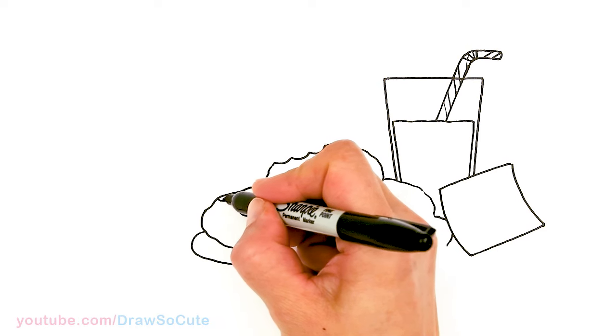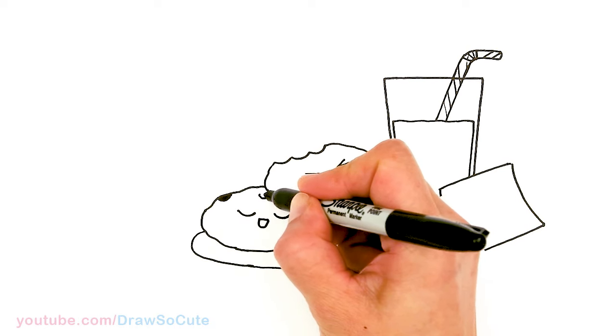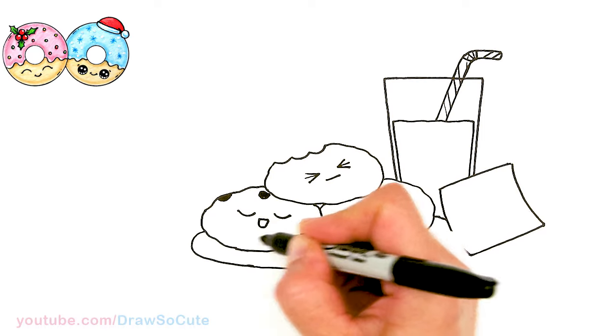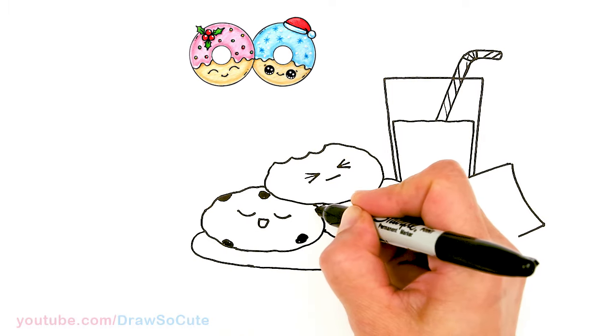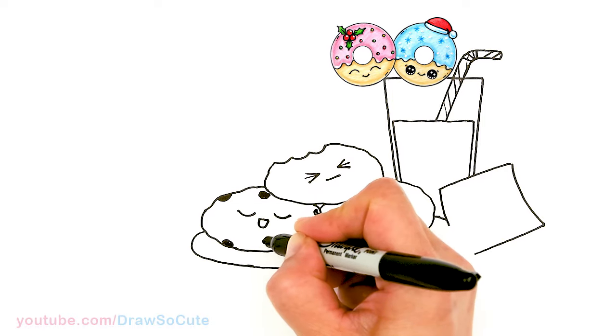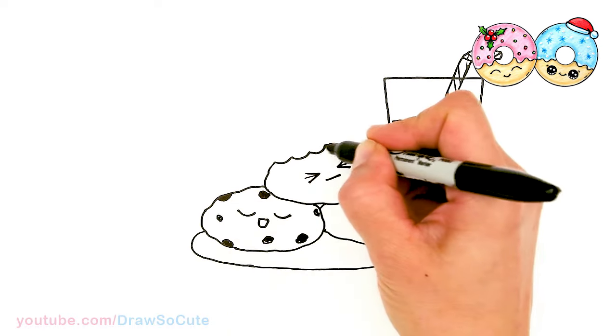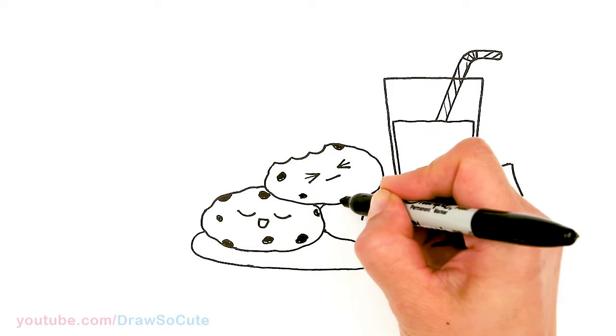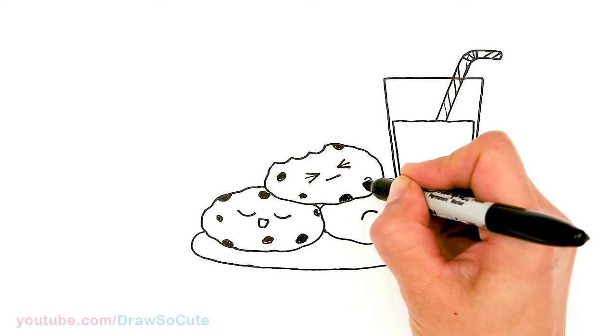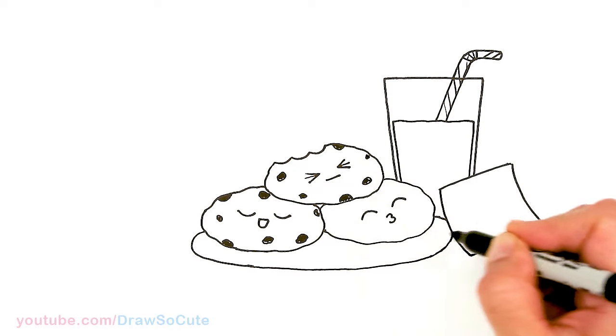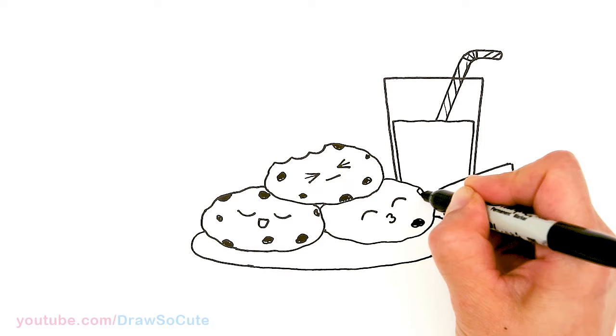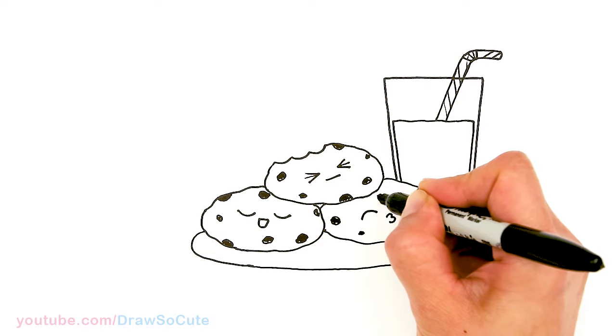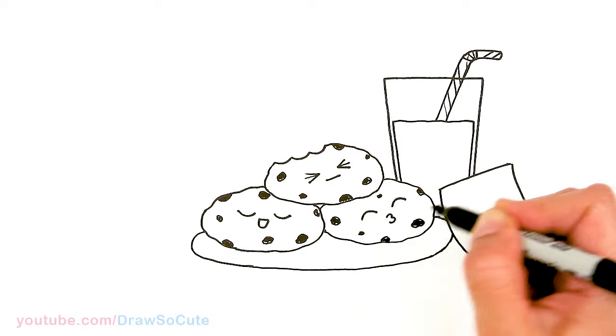Okay, so then let's come back in here. We're going to add some chocolate chips. So here and there just add some wobbly dark circles, ovals.